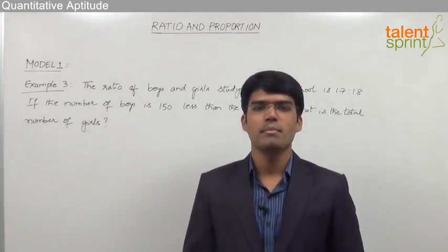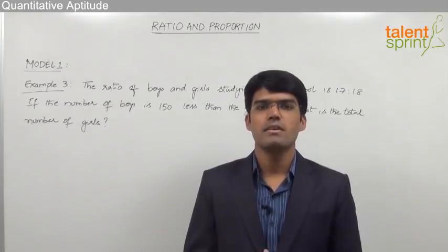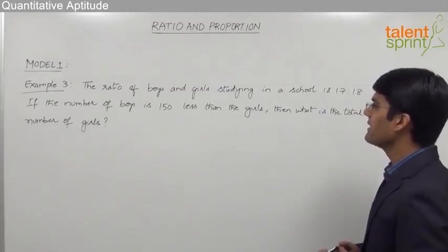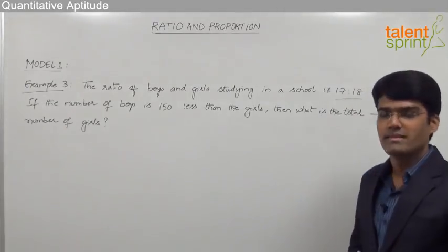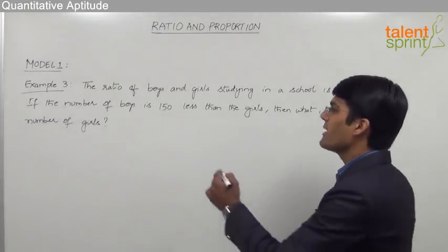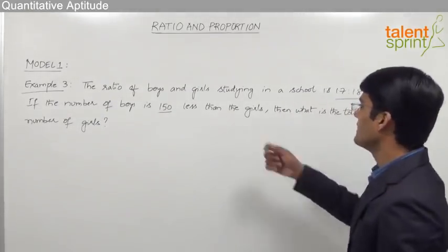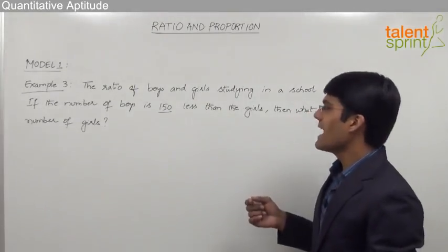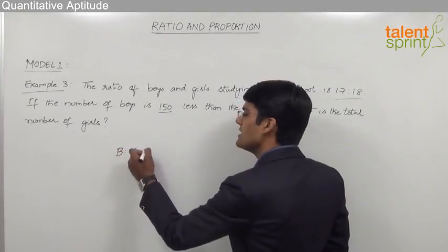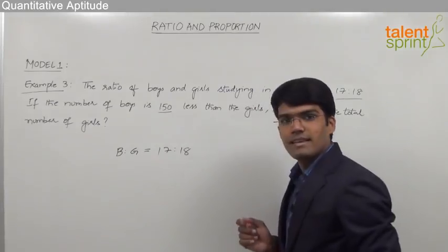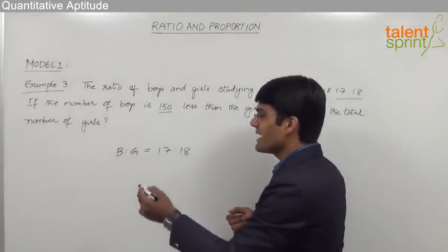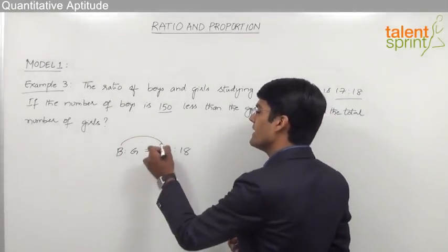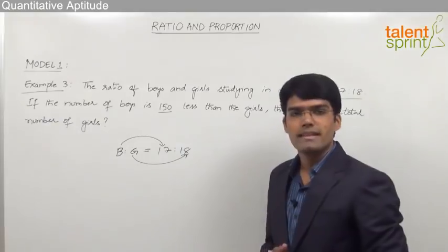Let us now take the third example from model 1, again based on the concept of ratios. The question is: the ratio of boys and girls studying in a school is 17 is to 18. If the number of boys is 150 less than the girls, what is the total number of girls? From the given question, B:G = 17:18, so boys get 17 parts and girls get 18 parts.